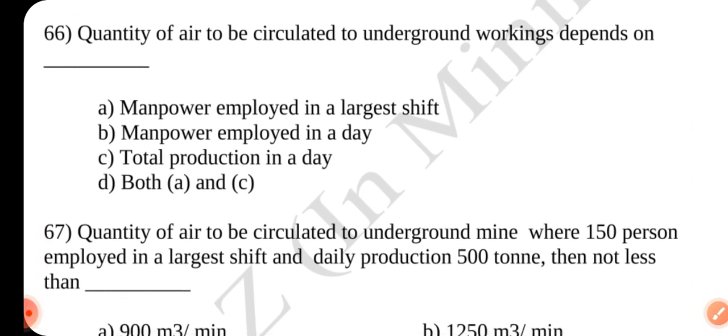Question number 66. Quantity of air to be circulated to an underground working depends upon dash. Answer is D. Both A and C.